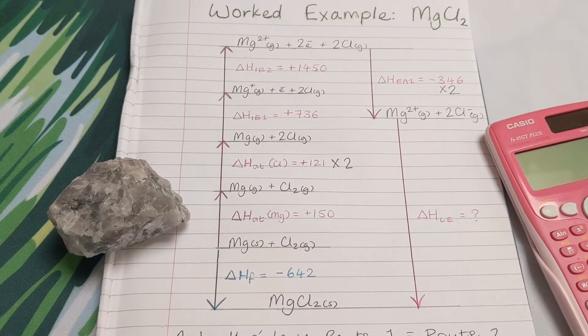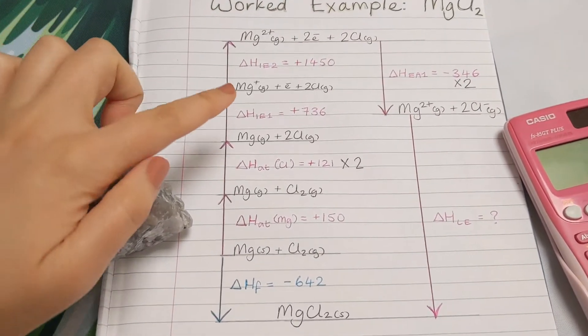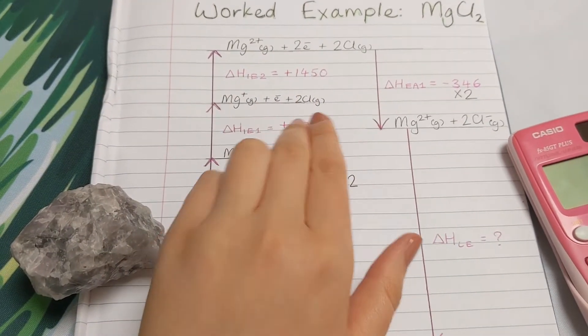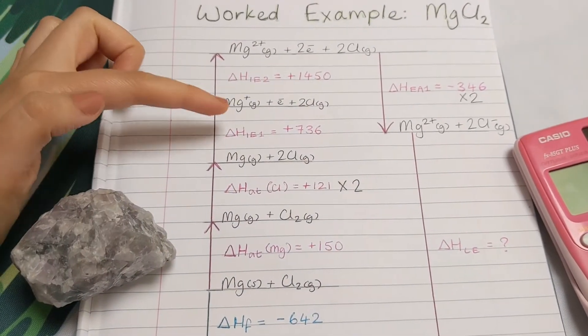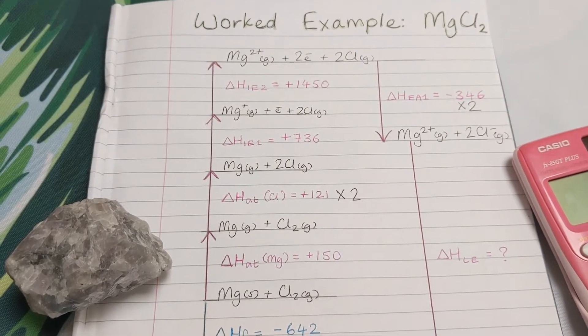In this example it's the same kind of thing. The only extra step is the second ionization energy of the magnesium because since magnesium is in group 2, it doesn't form a 1 plus metal ion, it forms a 2 plus metal ion.